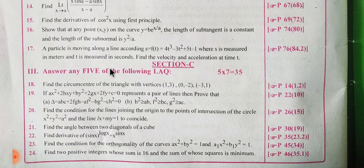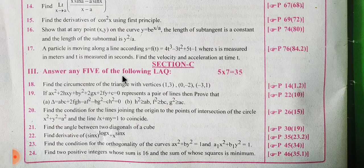Next is Section C. In Section C, you have 7 marks. If you look at these 5 papers, you have a score — you have to score up to 50 marks easily.